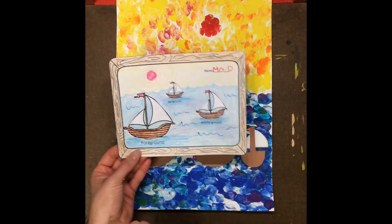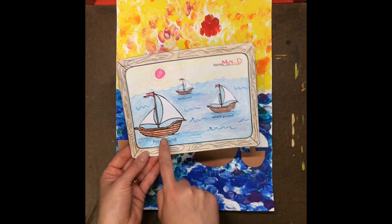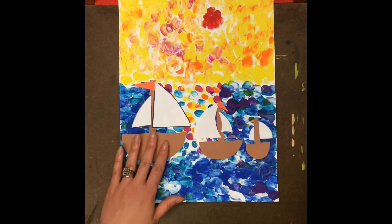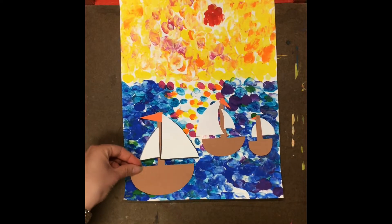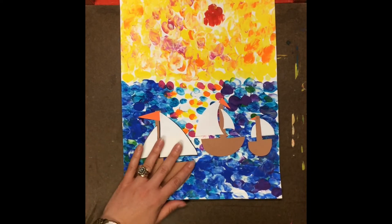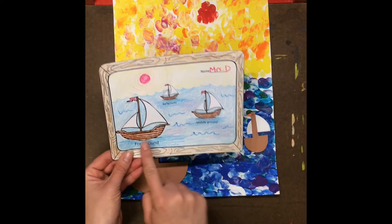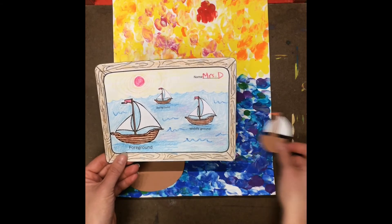going to create your foreground, middle ground, background. So things that are on the foreground are always very low on the page. So this boat needs to be scooched down lower.